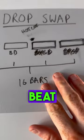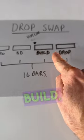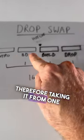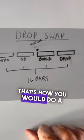we can then just do a beat match at this exact moment here and blend from one track to the next during the build, therefore taking it from one song's drop and building it into a completely different song's drop. That's how you would do a drop swap.